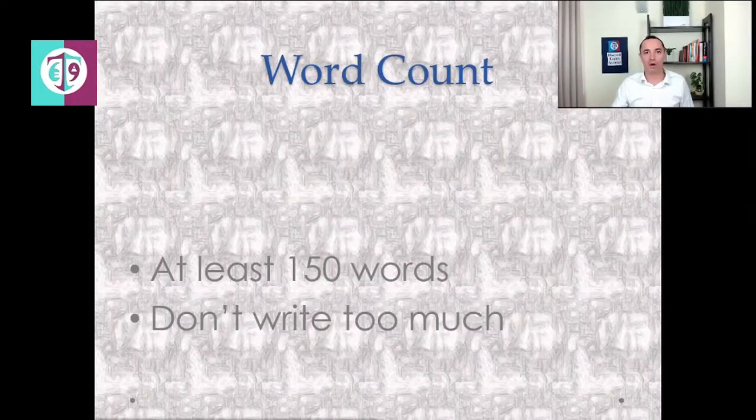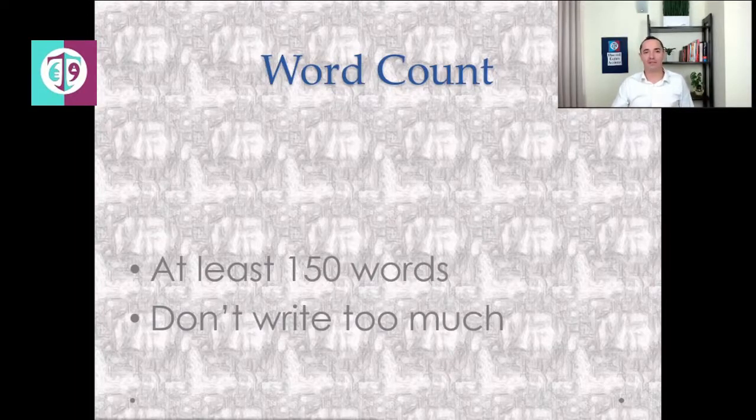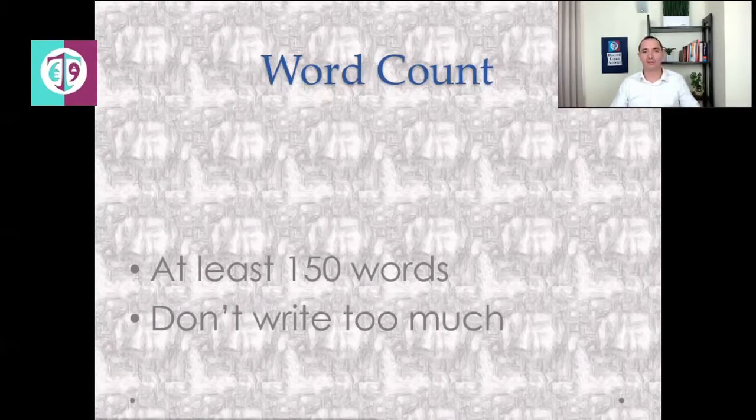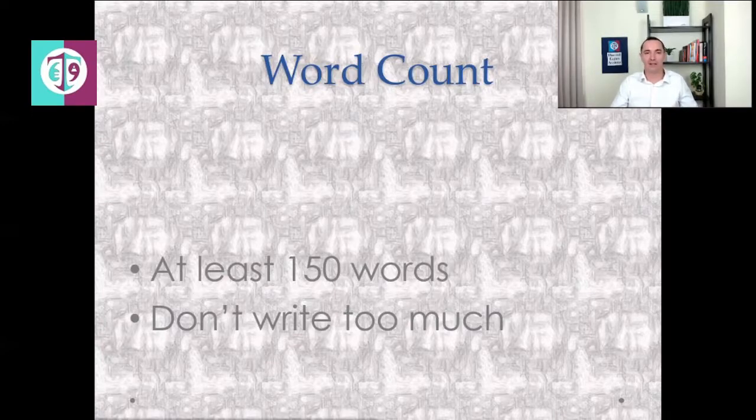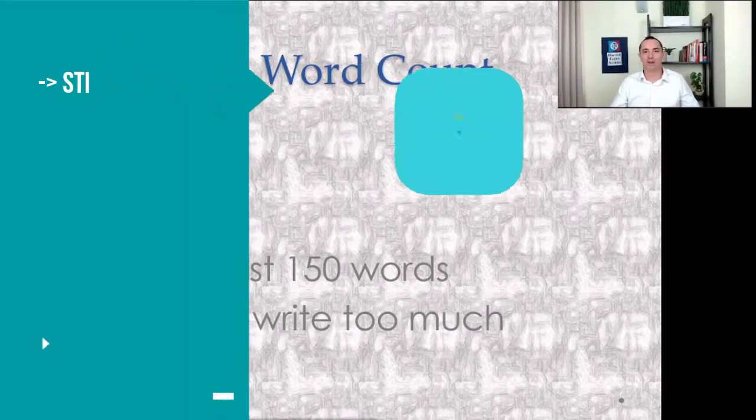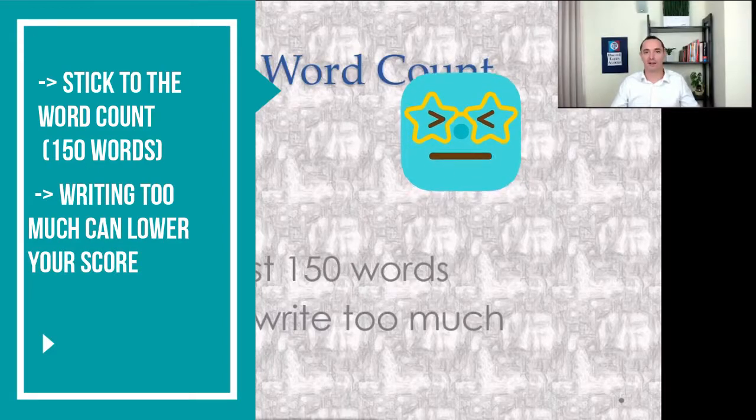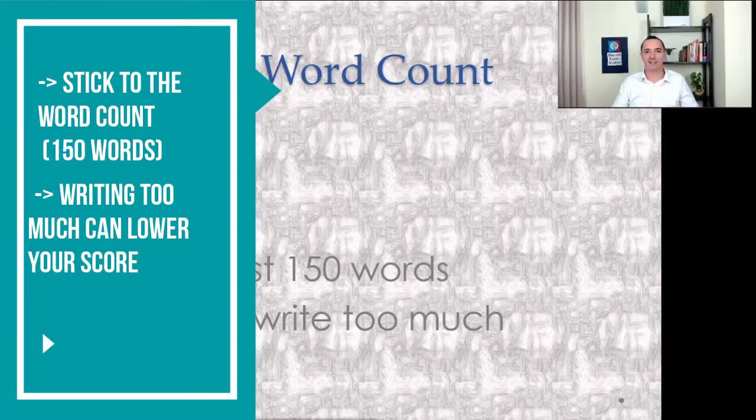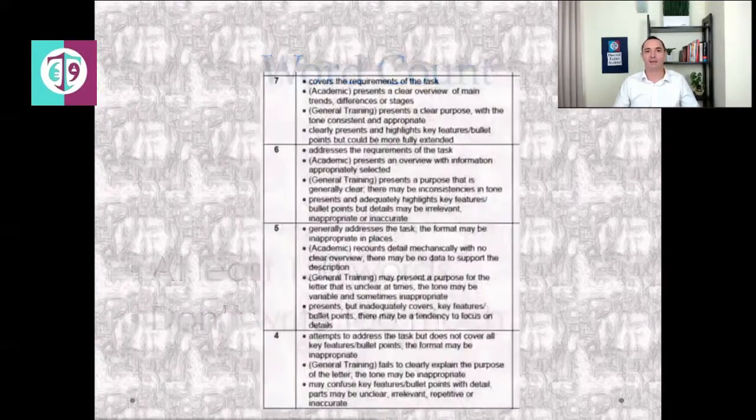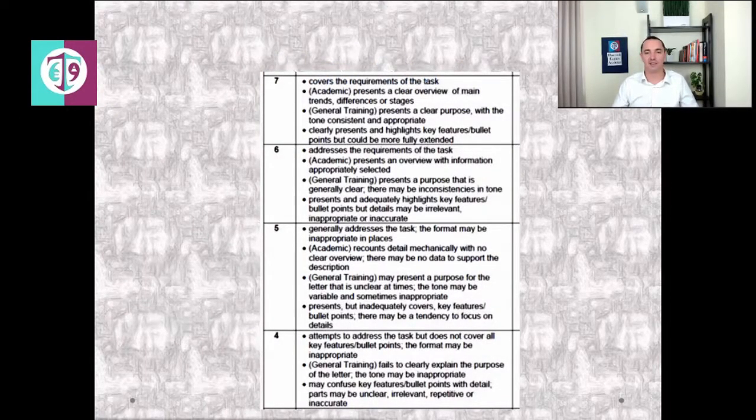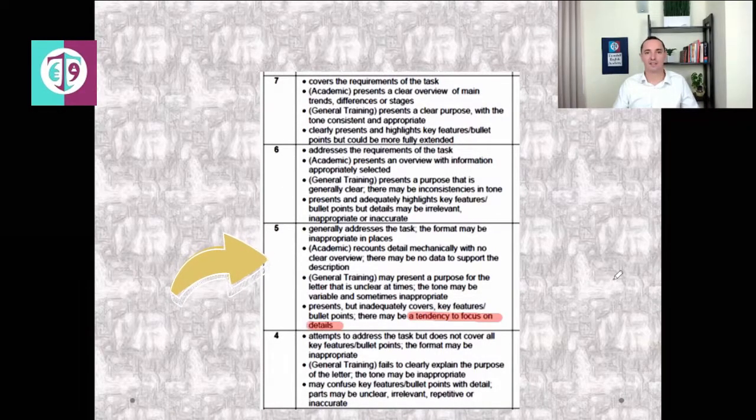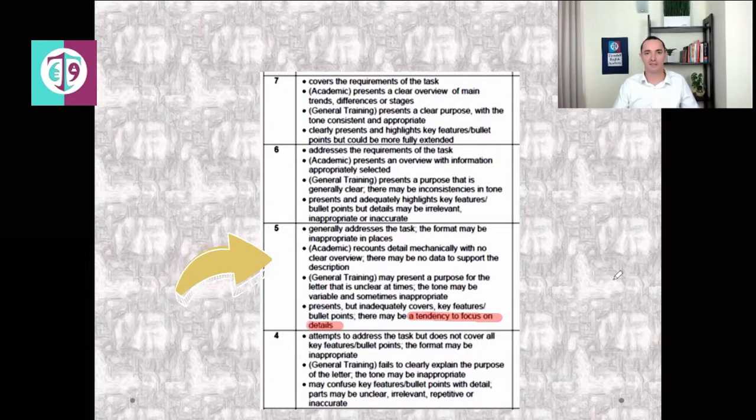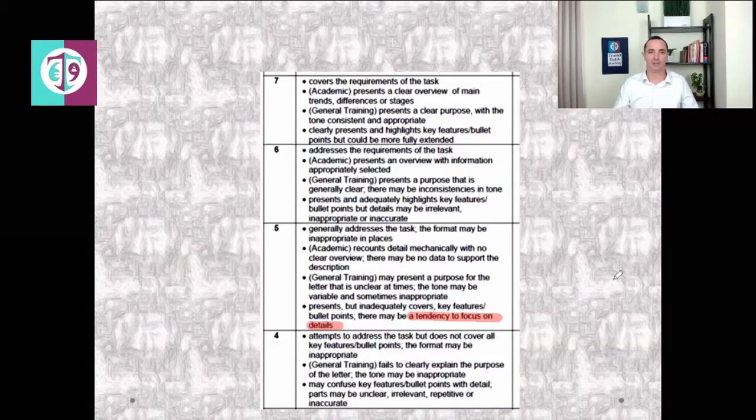Let's talk about word count first of all. The word count for task 1 is 150 words. Now of course you can go a little bit over that, but try not to, because firstly you're going to waste time, and secondly you might be talking about detail that isn't really important. Focusing on too much detail is a feature of a band 5. We're trying to get above that. As you can see right there, tendency to focus on details, and also it means you're not selecting the important information.